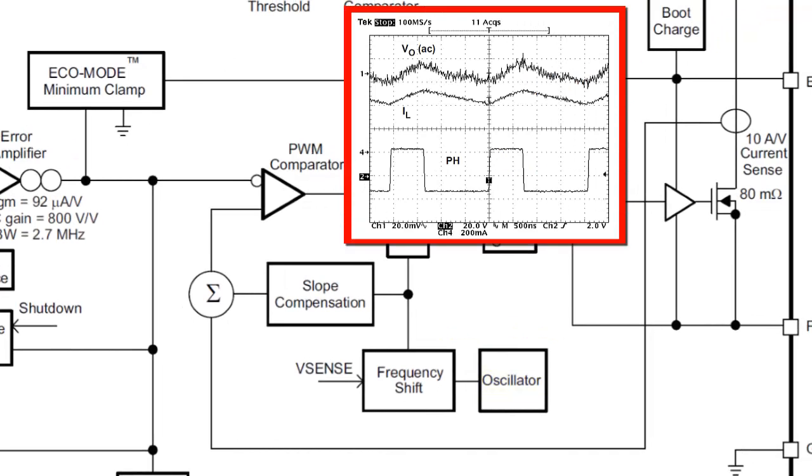During normal operation, the FET is turned on at the start of the cycle. As the current through the FET rises, it is sensed and compared to the output of the error amplifier. Once it crosses this threshold, it turns off the FET for the remainder of the cycle. A slope compensation network ensures a linear slope on the current ramp, even when higher duty cycles cause the FET current to exponentially level off.